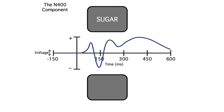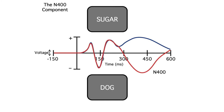We might also have a sentence like the one shown at the bottom of the screen here: I take my coffee with cream and dog. If the meaning of the last word doesn't fit well with the rest of the sentence, you get a very different brain response. The initial sensory processing is the same for the two words, but the semantically incongruous word elicits this big N-400 wave, peaking around 400 milliseconds after the onset of the word.